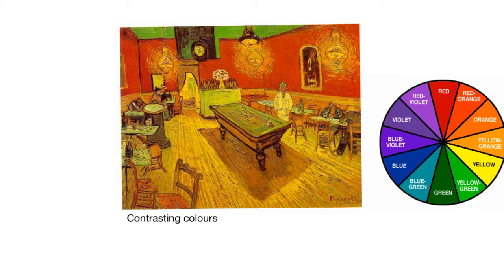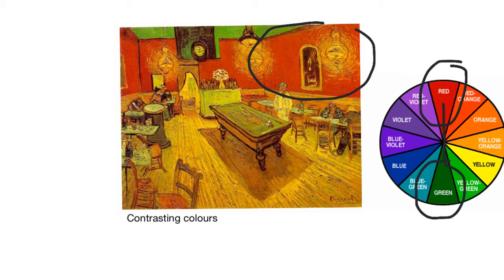Let's first look at Van Gogh's painting 'The Night Cafe.' It's full of contrasting colors — contrasting colors are opposite on the color wheel. So you've got red, and the opposite of that is green. We can see that he uses very bright red walls, and these are contrasted with lime green cupboards and the cover of the billiard table. That makes those colors really clash against each other.